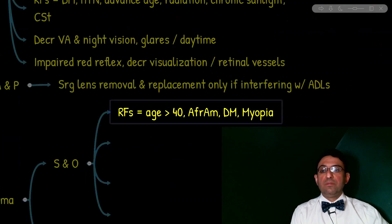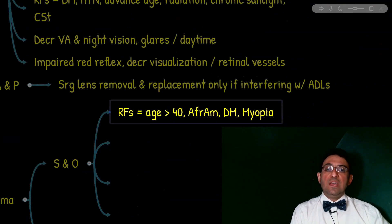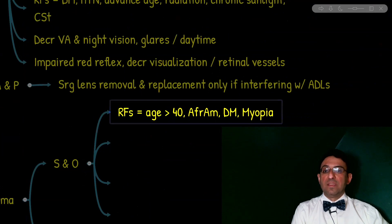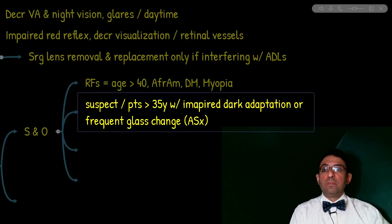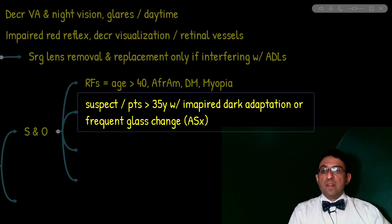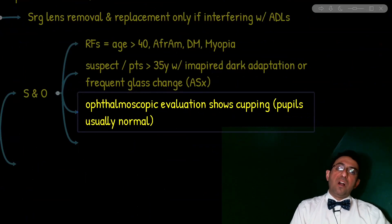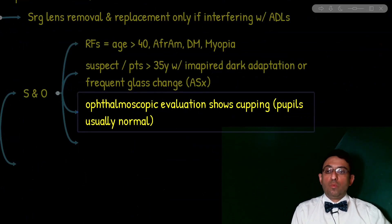Here we want to quickly review the findings associated with open-angle glaucoma. Risk factors include age older than 40, diabetes, myopia (especially high myopia), and epidemiologically it is more prevalent among African Americans. We should suspect the diagnosis and perform workup in any patient older than 35 who complains of impaired dark adaptation or requires frequent glasses changes. On ophthalmoscopic evaluation, we see cupping, while pupil size is usually normal, contrary to the acute type.